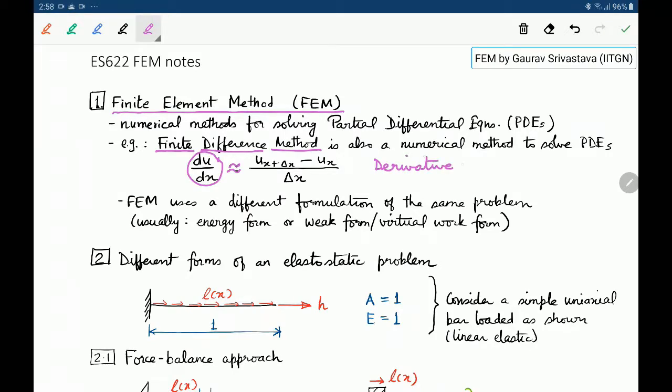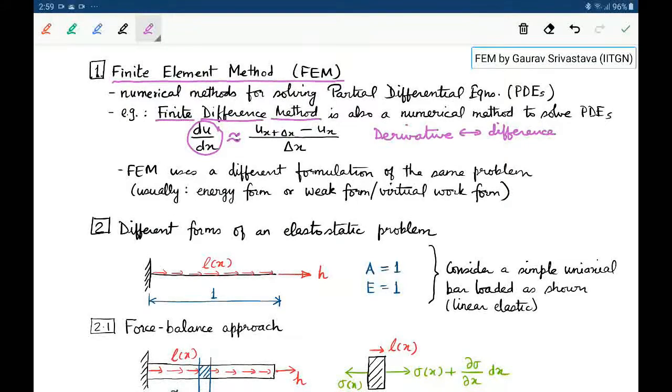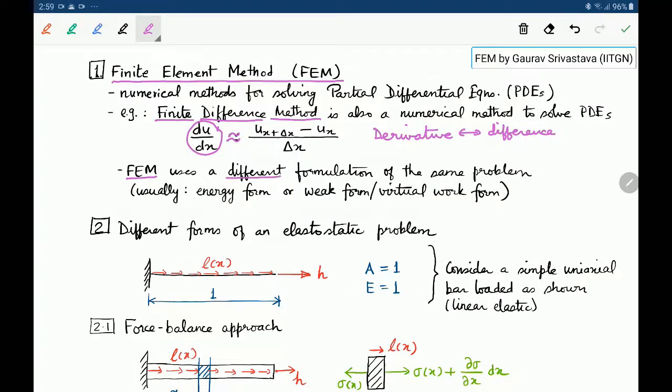And for this reason, the finite difference method is able to use the usual form of a partial differential equation. Now, finite element method uses a different formulation. It will not use the actual form of a partial differential equation where it appears in these derivative forms, but it will use an equivalent version of the same formulation. And these two equivalent forms are usually called either the energy forms or the so-called weak forms, weak or virtual work forms.